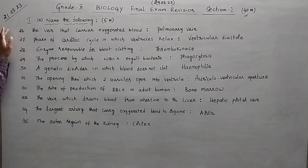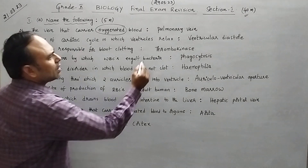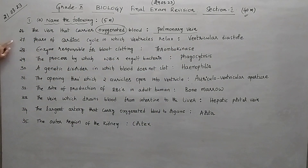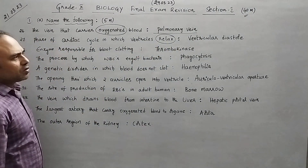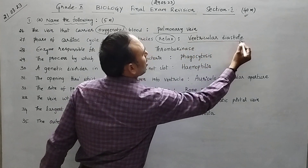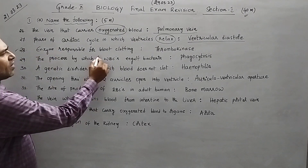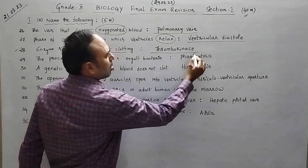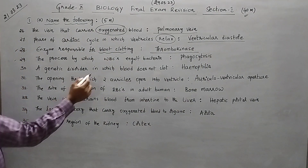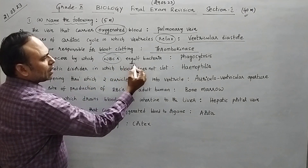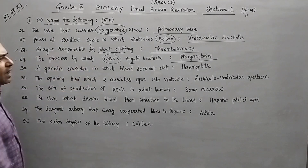Question 26: the vein that carries oxygenated blood — that is the pulmonary vein. Question 27: the phase of the cardiac cycle in which the ventricles relax — that is ventricular diastole. Question 28: the enzyme responsible for blood clotting — that is thrombokinase.